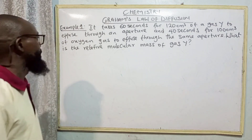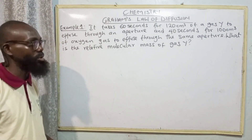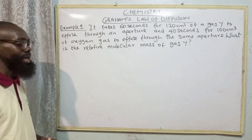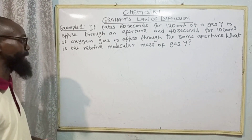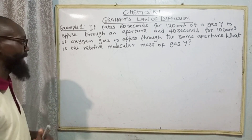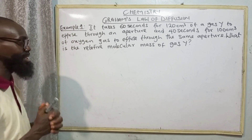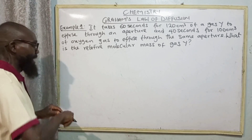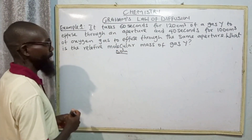Example 1. It takes 60 seconds for 120 centimeter cube of gas Y to effuse through an aperture, and 40 seconds for 100 centimeter cube of oxygen gas to effuse through the same aperture. What is the relative molecular mass of gas Y? We're talking about two gases here: gas Y and oxygen. Now let's take out our parameters.